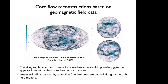The most prevailing explanation is an eccentric planetary gyre that appears in most modern core flow reconstructions. This is a westward jet that circles the tangent cylinder in the Pacific hemisphere, then stretches out towards the equator in the Atlantic hemisphere, giving rise to the strong westward drift we see at the equator. In this case, the westward drift is caused by advection — field lines carried by bulk fluid motion.